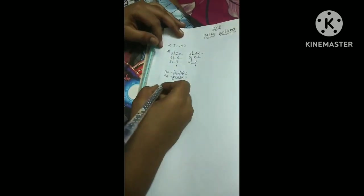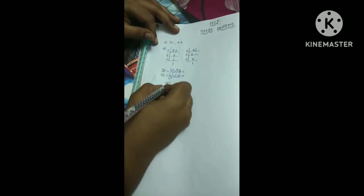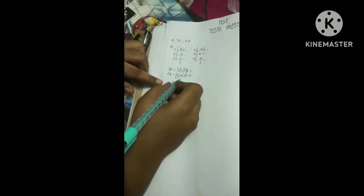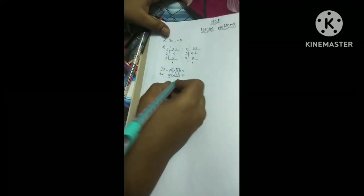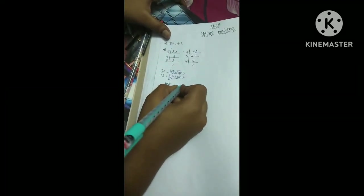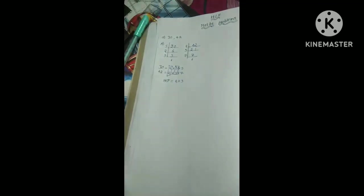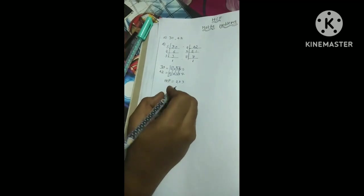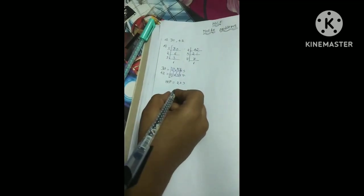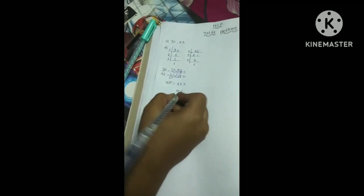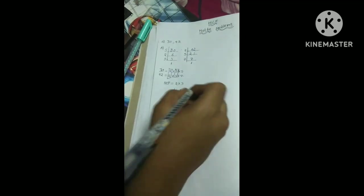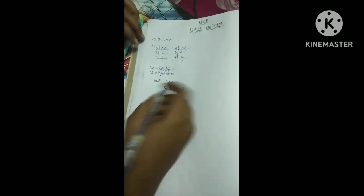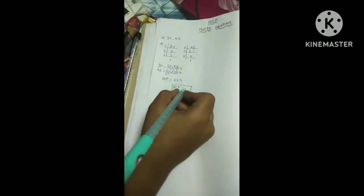Now HCF is equals to. Still didn't come the answer. We should write 2 into 3. Can you guess the answer, friends? Okay, I will tell. 2 times 3 is 6. HCF is equals to, make a box, 6.